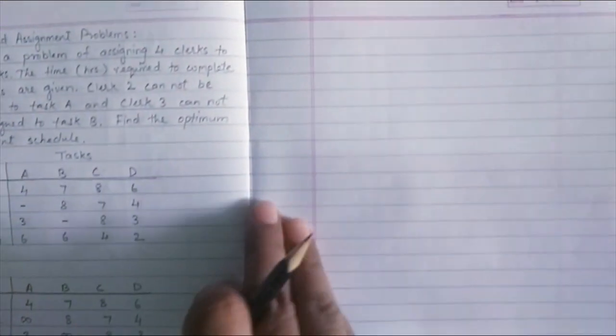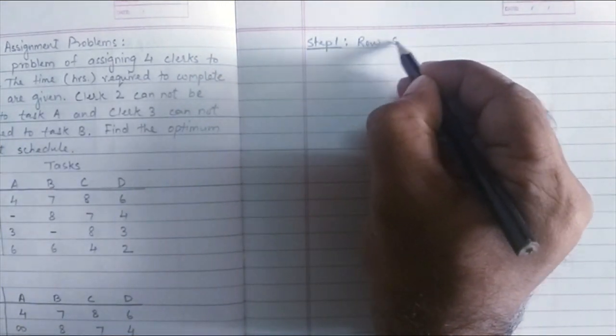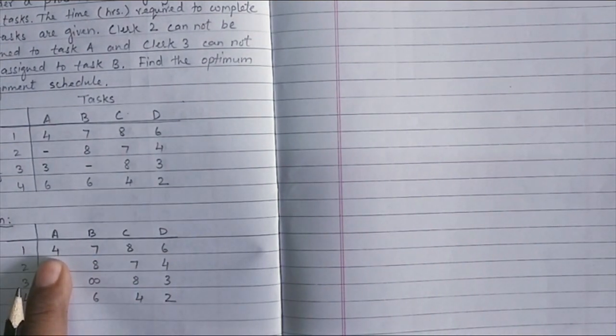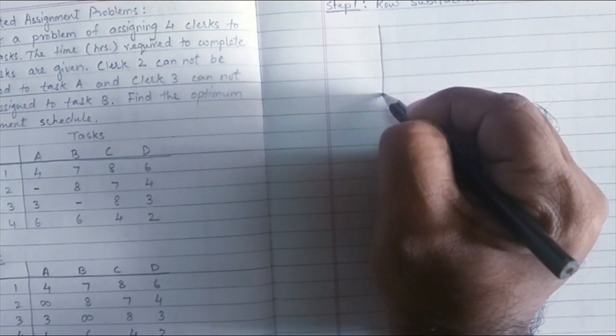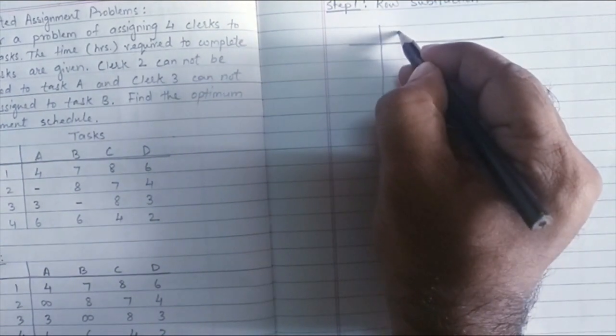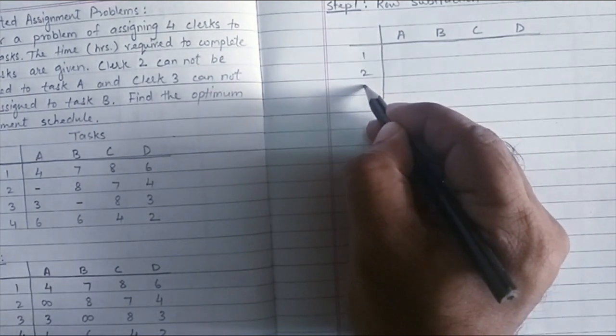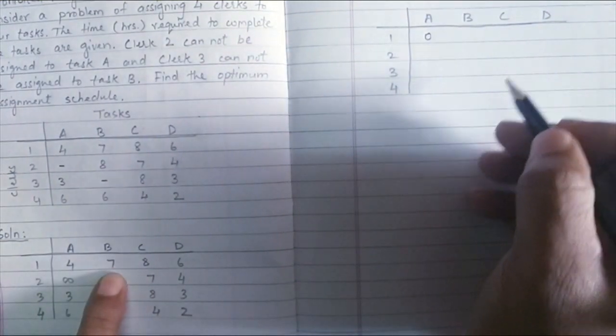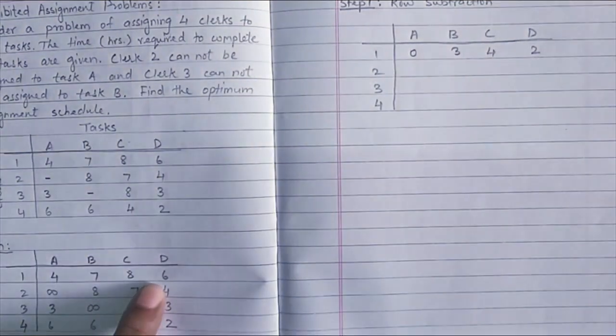Let us follow the Hungarian method now and solve this problem further. To do that, I will write the first step. Step number one, row subtraction. If you look at the first row, the minimum value is four. So I will subtract four from all of these values in that row. So let us put the matrix form A, B, C, D, one, two, three, and four. So we have four minus four will give me zero. Seven minus four. That gives me three, four, and two.